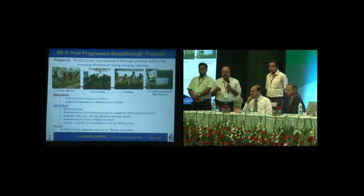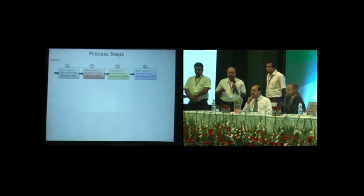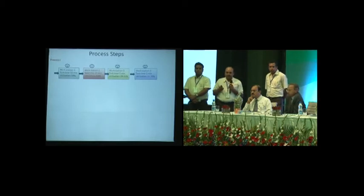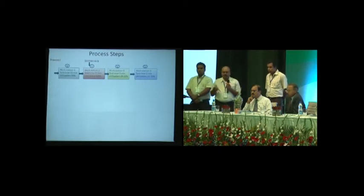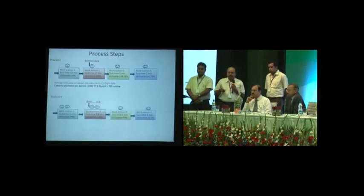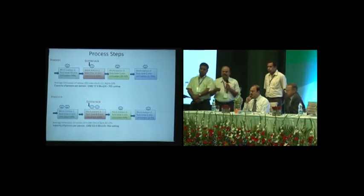Now I will explain how we achieved process improvement through process analysis. There are four workstations. For easy understanding, one unit equals 100 cuttings. With one operator at every workstation, the takt times are different — workstation 2 is the bottleneck, taking 17 minutes to complete its task. By this process, labor utilization is only 50 percent, giving 705 cuttings per person. In the second step, one more operator is added to workstations 1 and 2 — the bottleneck remains workstation 2, but utilization increases to 60 percent, resulting in 941 cuttings.